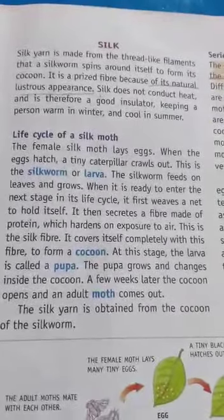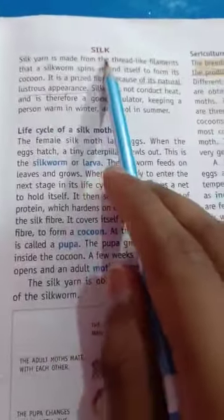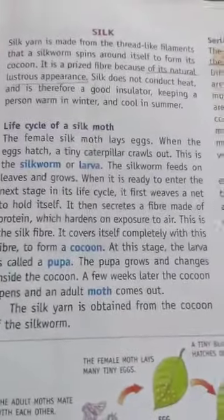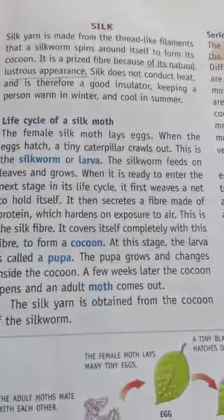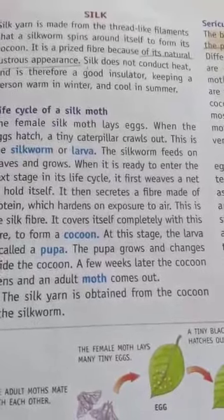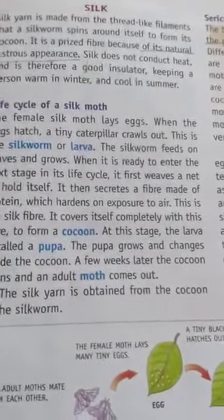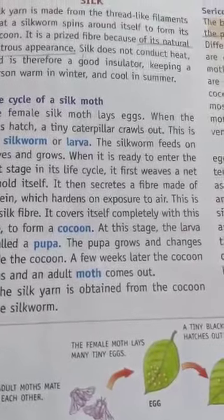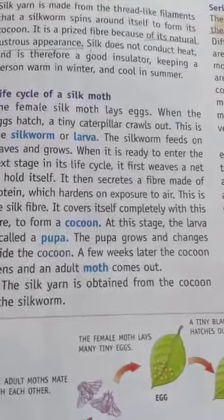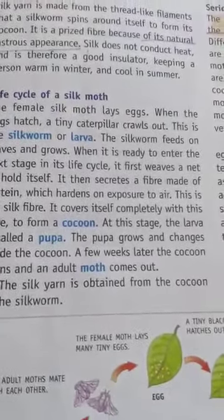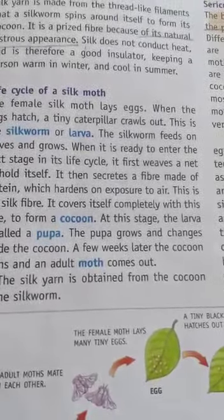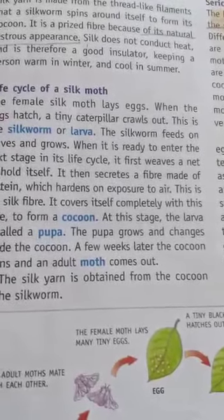The first topic is silk. Silk is a natural fiber which is obtained from an insect called the silk moth. Silk fibers are also animal fibers. Silkworms spin the silk fiber. The silk fiber is made up of protein. Silk is the strongest natural fiber.